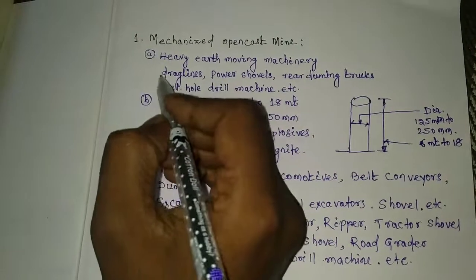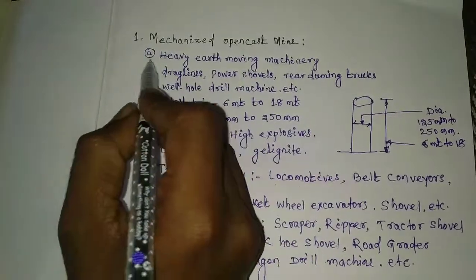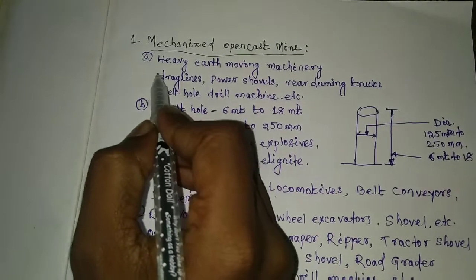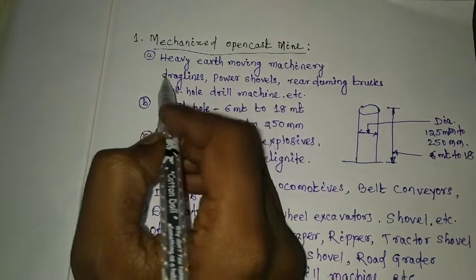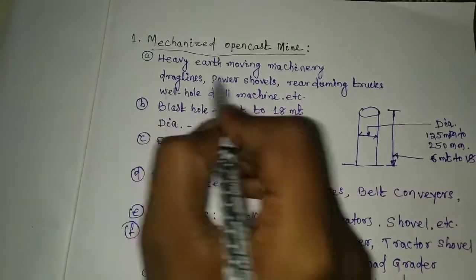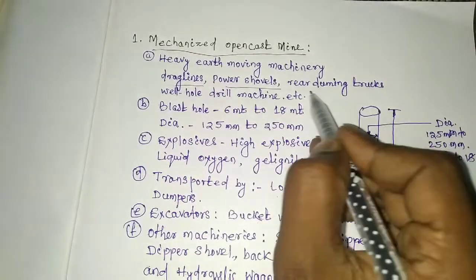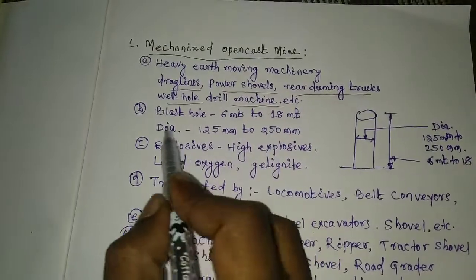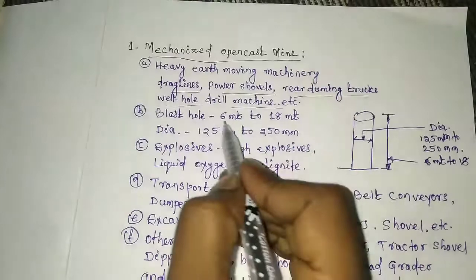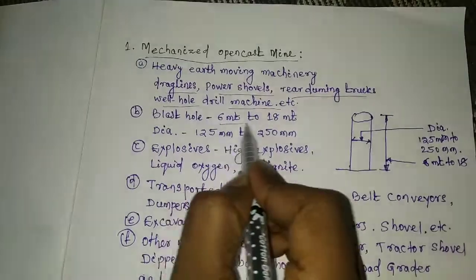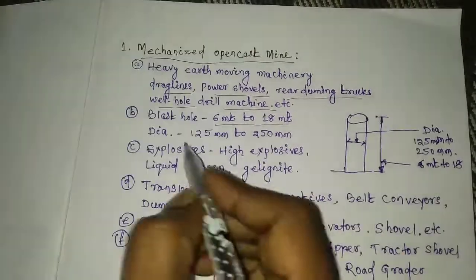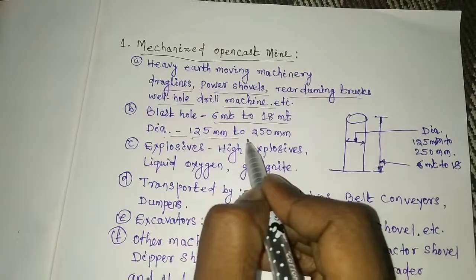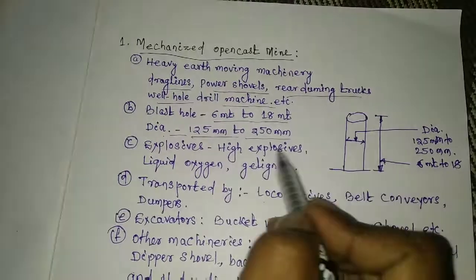Let's first look at mechanized opencast mine. In this mine, generally heavy earth-moving machinery like drag lines, power shovels, rear dumping trucks, well hull drill machines, etc. are used. Blast hole depth generally varies from 6 meters to 18 meters, and diameter also varies from 125 mm to 250 mm in different mines.